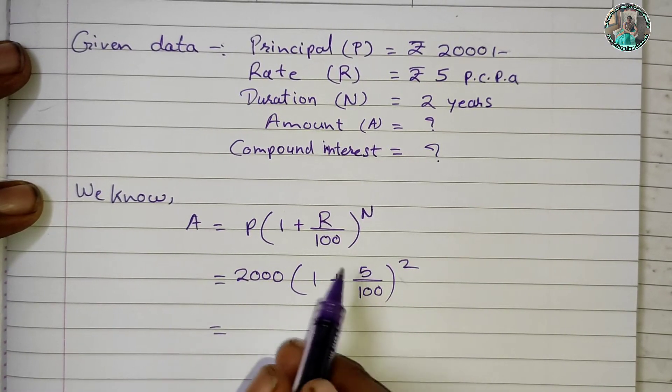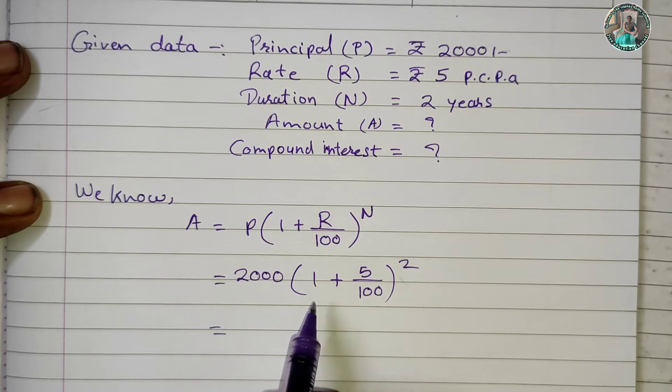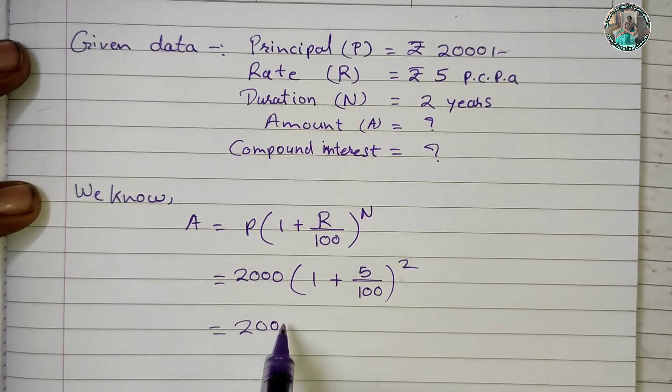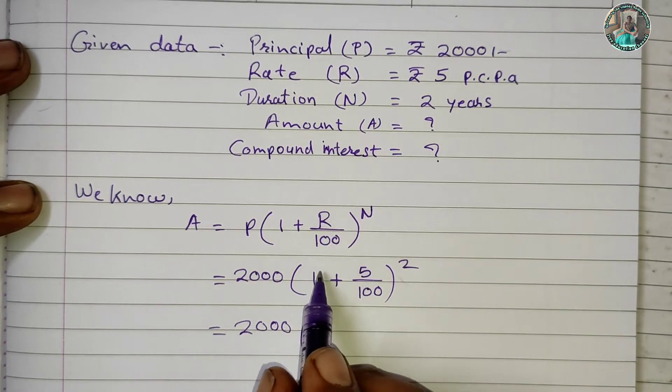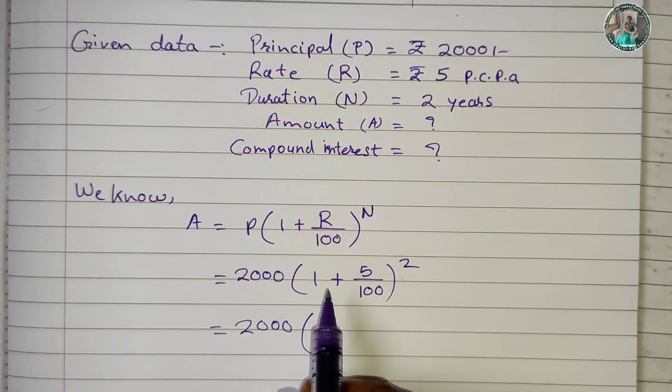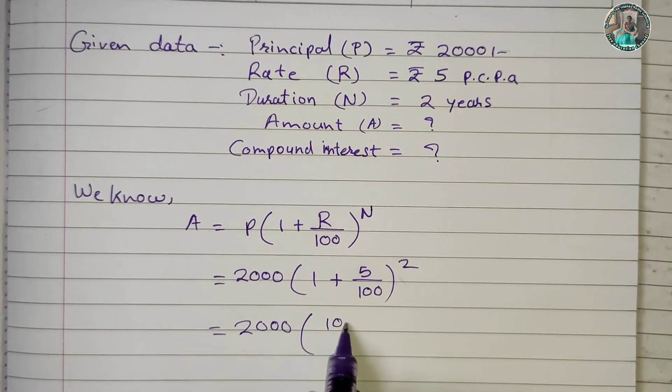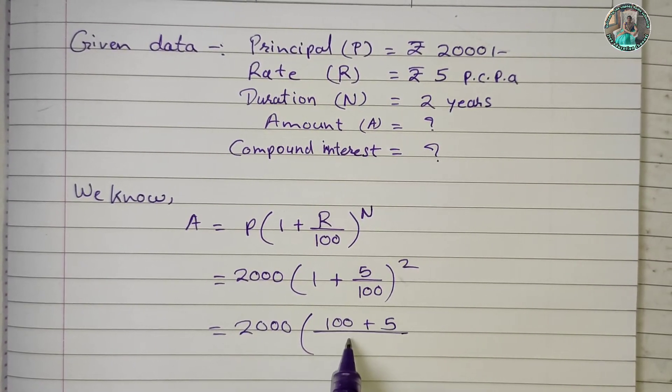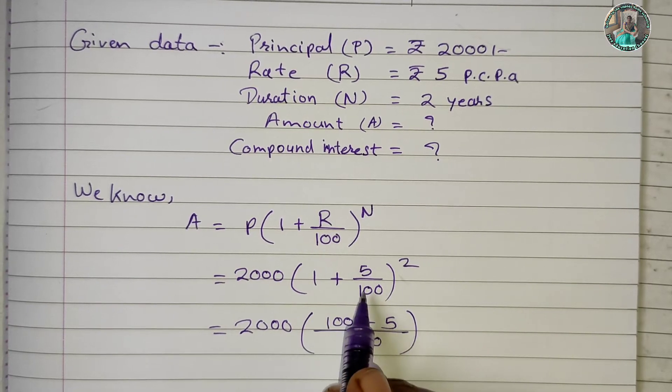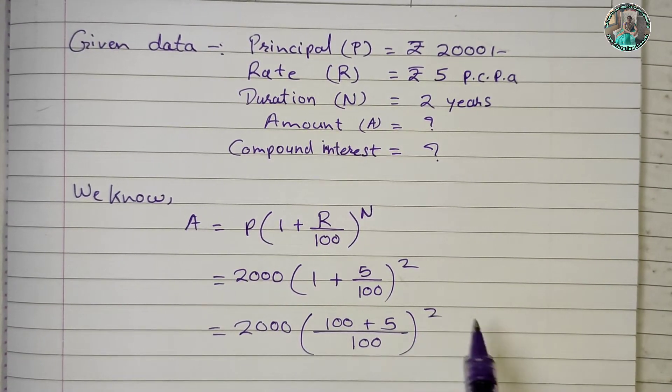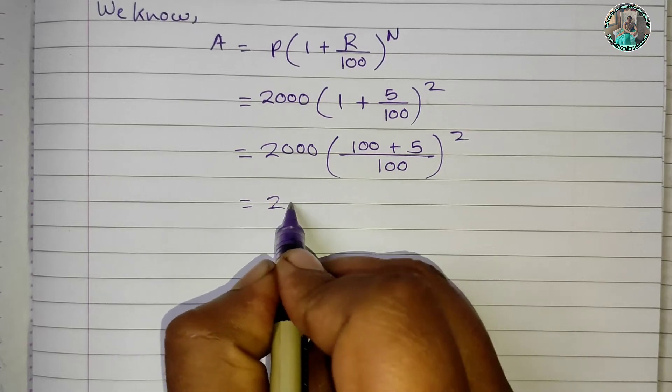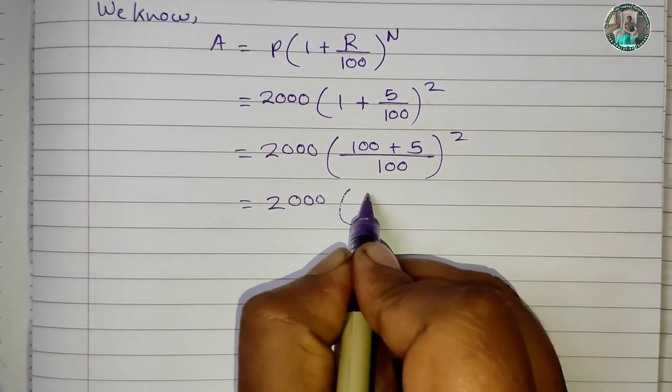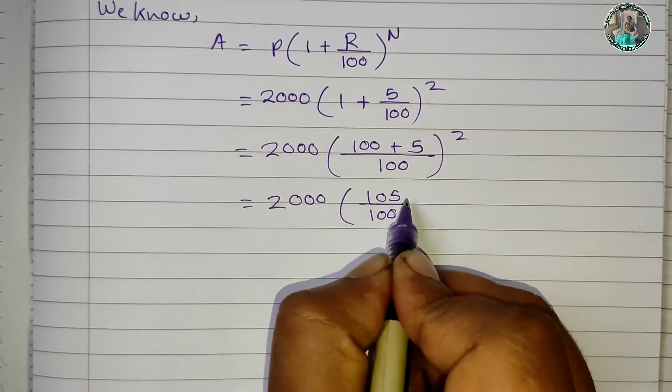Now we solve the question. Taking common denominator 100, this becomes 2000 times (100 plus 5) upon 100, raised to 2. This equals 2000 times (105 upon 100) squared.